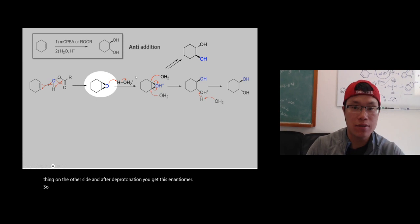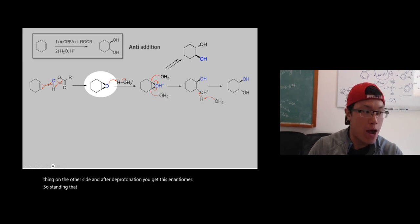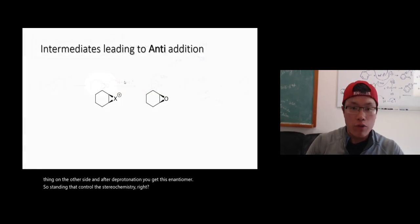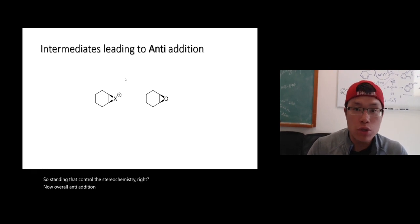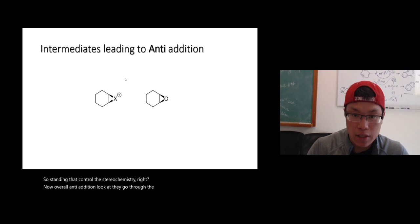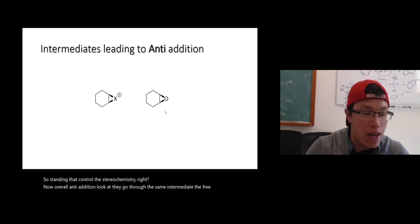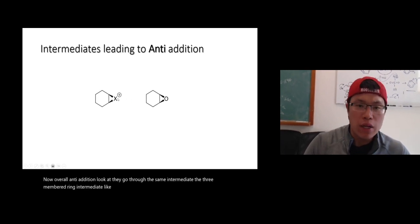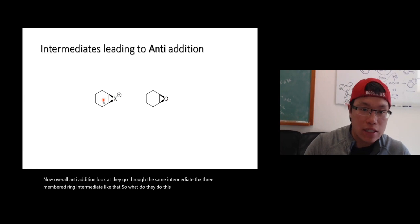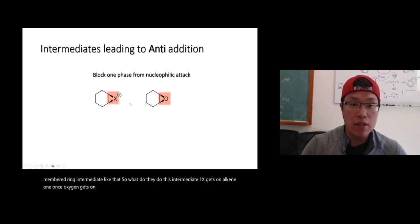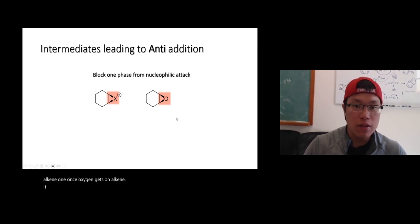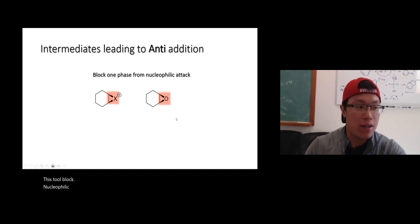So same thing that controls the stereochemistry, alright? Now, overall, anti-addition, okay? They go through the same intermediate, the three-membered ring intermediate like that. So what do they do? This intermediate, one X gets on alkene, one oxygen gets on alkene.